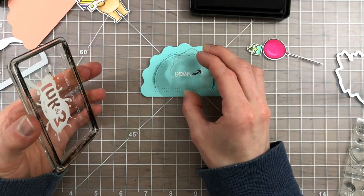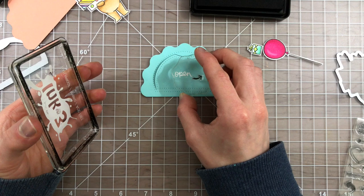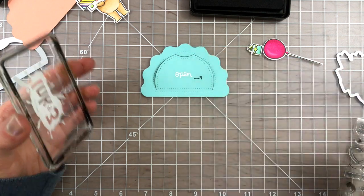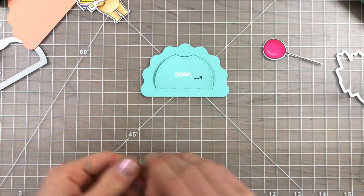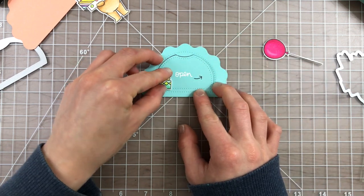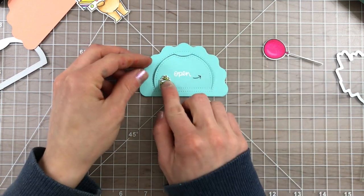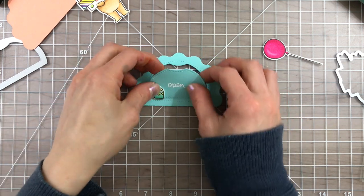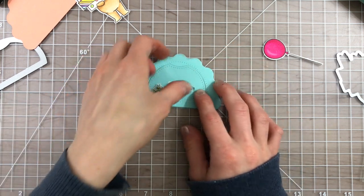Now speaking of decorating, I pulled out the Lawn Fawn Push Here stamp set which features a lot of interactive greetings and I wanted to be able to put a greeting that says open with an arrow onto the front of this window. Then I'll take one of the presents that I colored, the single present, and pop that up off of the front of the window using some foam tape.